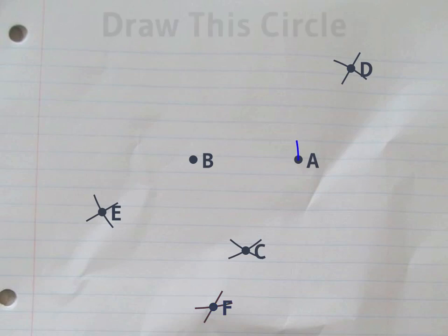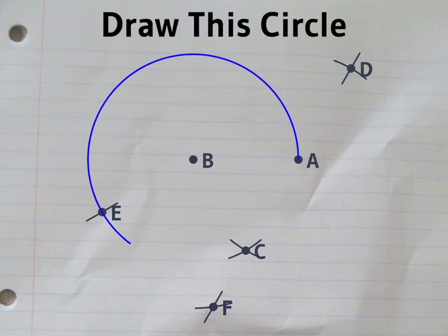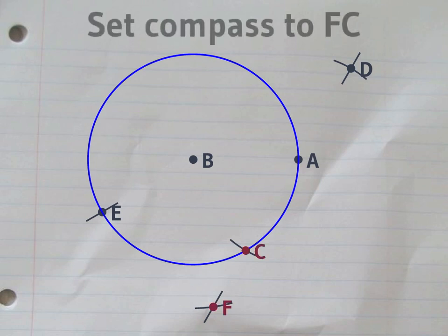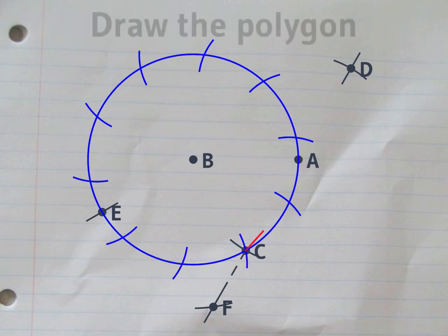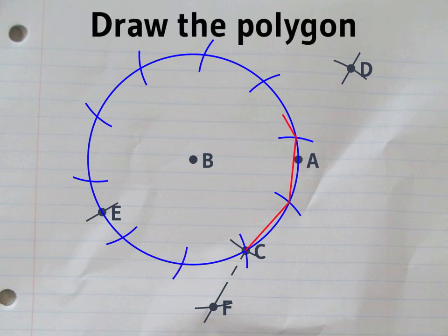We're almost ready to draw the decagon. Let's redraw the small circle centered on B. The distance between F and C is exactly the length of the edge of a regular decagon inside that circle. Once you've got these points equally spaced around the circle, you can draw the ten sides of the decagon.